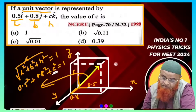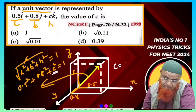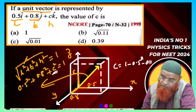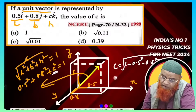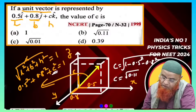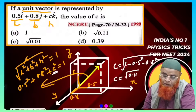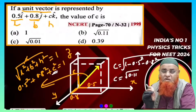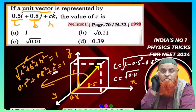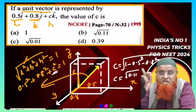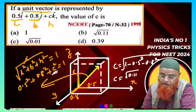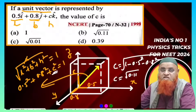After solving, the value of C = √(1 - 0.5² - 0.8²), which gives C = 0.11. This is the method of understanding the problem in terms of mensuration — specifically the diagonal of a cuboid.